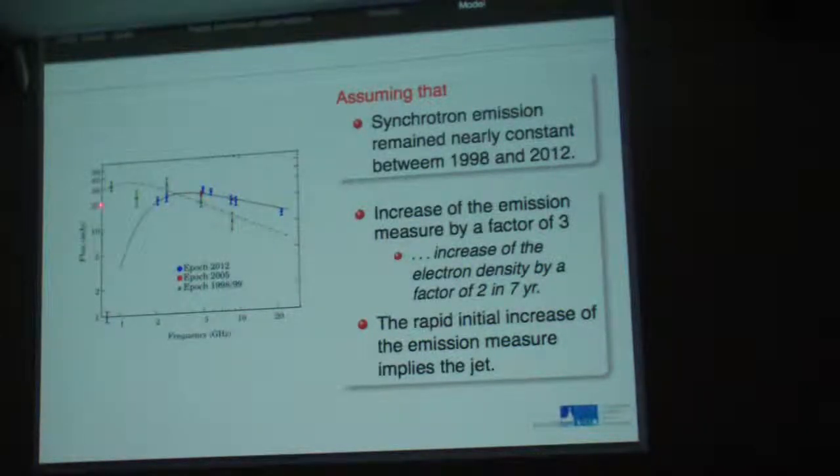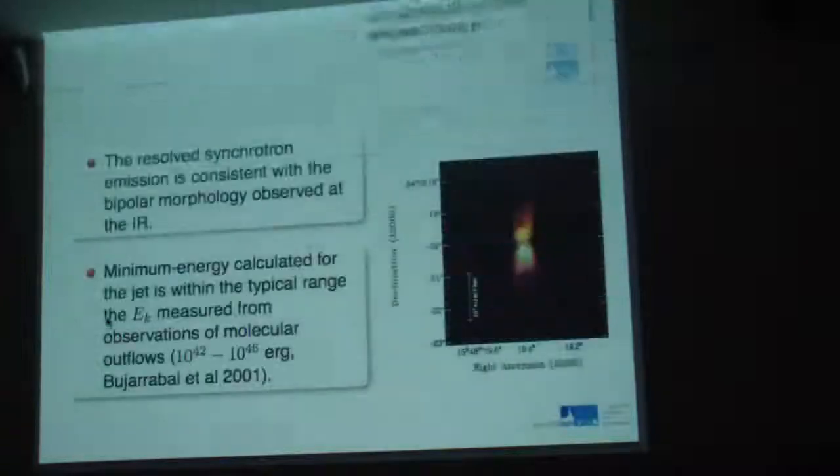What about the difference between the previous observations and our observations? The interpretation that we give to this is: if we assume that the synchrotron component remains constant between 1998 and our observation in 2012, then this difference is due to an increase of the electron density in the thermal shell by a factor of 2 in 7 years. That rapid increase implies that those electrons could be generated by the propagation of the shock through the circumstellar envelope.